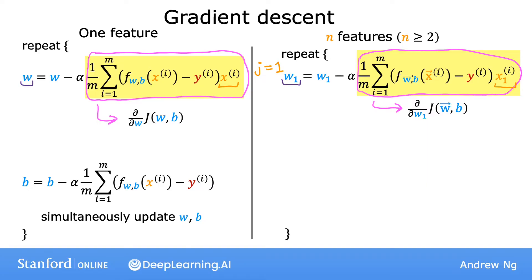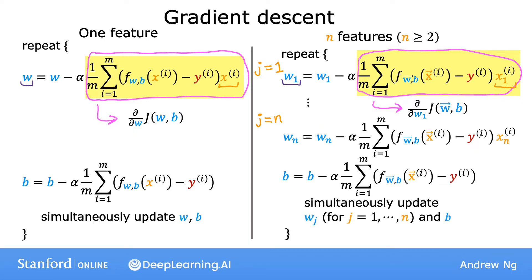For multiple linear regression, we have j ranging from 1 through n. And so we'll update the parameters w1, w2 all the way up to wn. And then as before, we'll update b. And if you implement this, you get gradient descent for multiple regression.